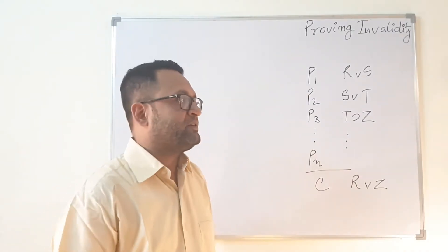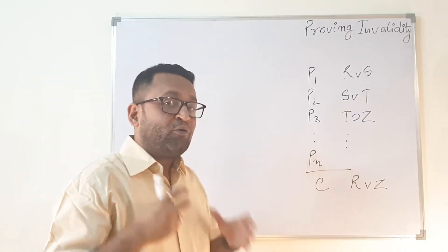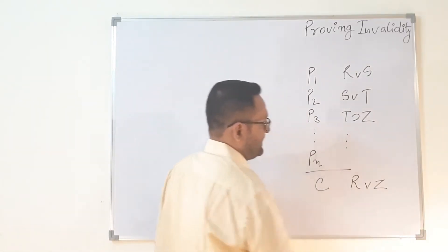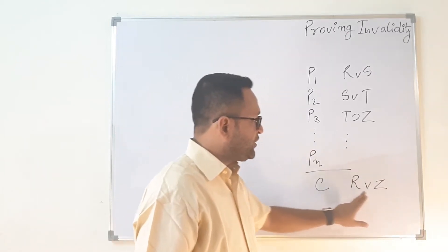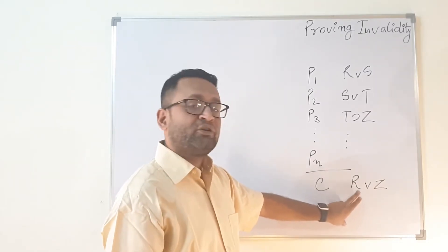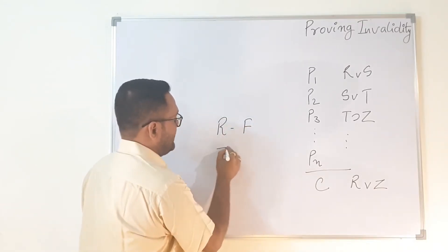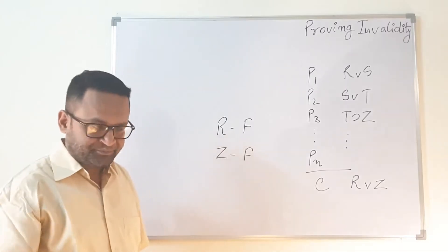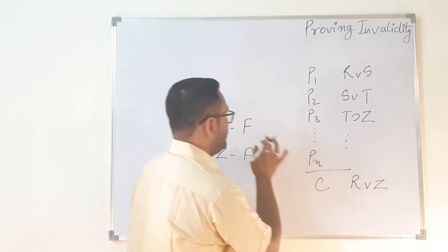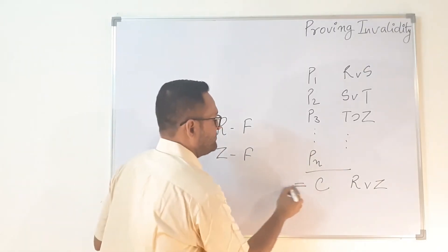What we do is find substitution instances for the conclusion first — how to make the conclusion false. In this argument, the conclusion R ∨ Z will be false when we put R as false and Z as false. So in order to make the conclusion false, we put R as false and Z as false, which makes the conclusion's value false.